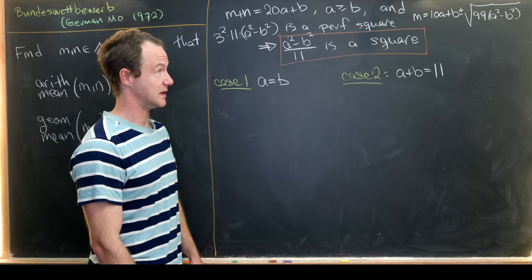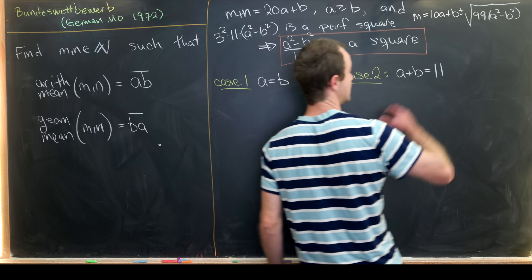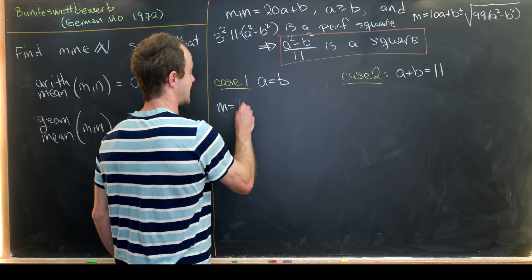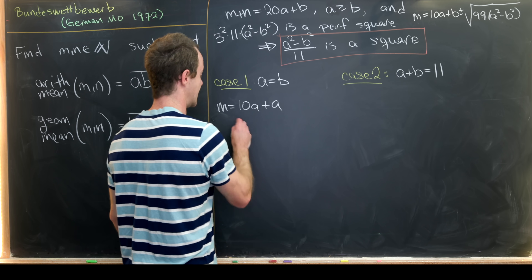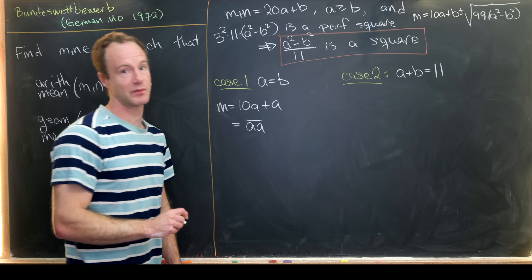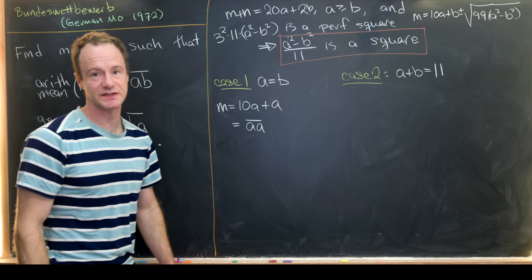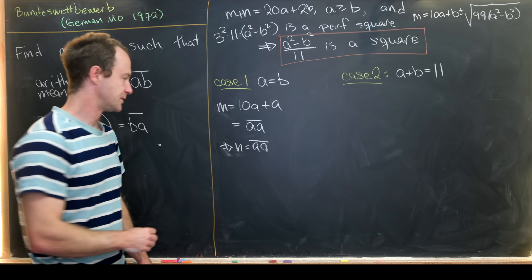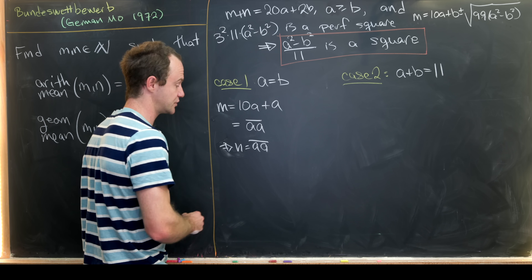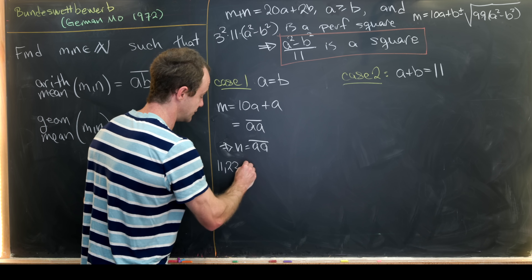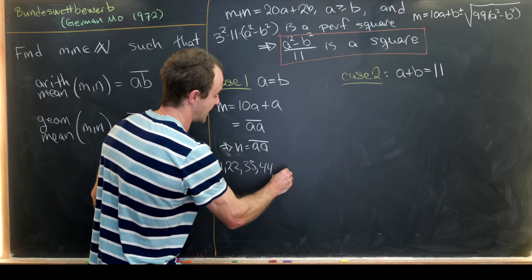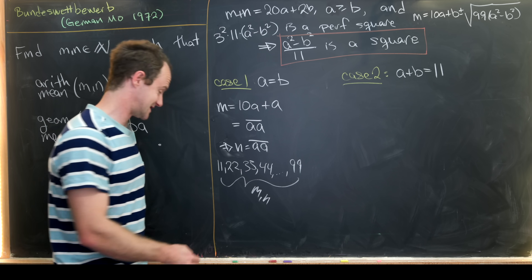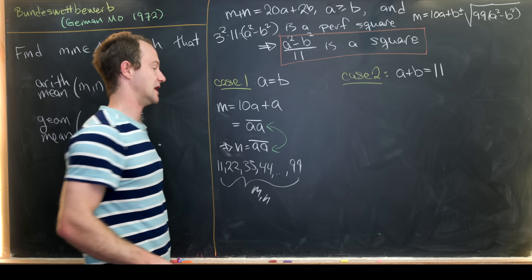In Case 1 where a = b, the square root cancels entirely and m = 10a+a, the two-digit number 'aa'. From m+n = 20a+2b = 22a, we get n = 'aa' as well. This yields nine solutions: m = n = 11, 22, 33, 44, 55, 66, 77, 88, 99.